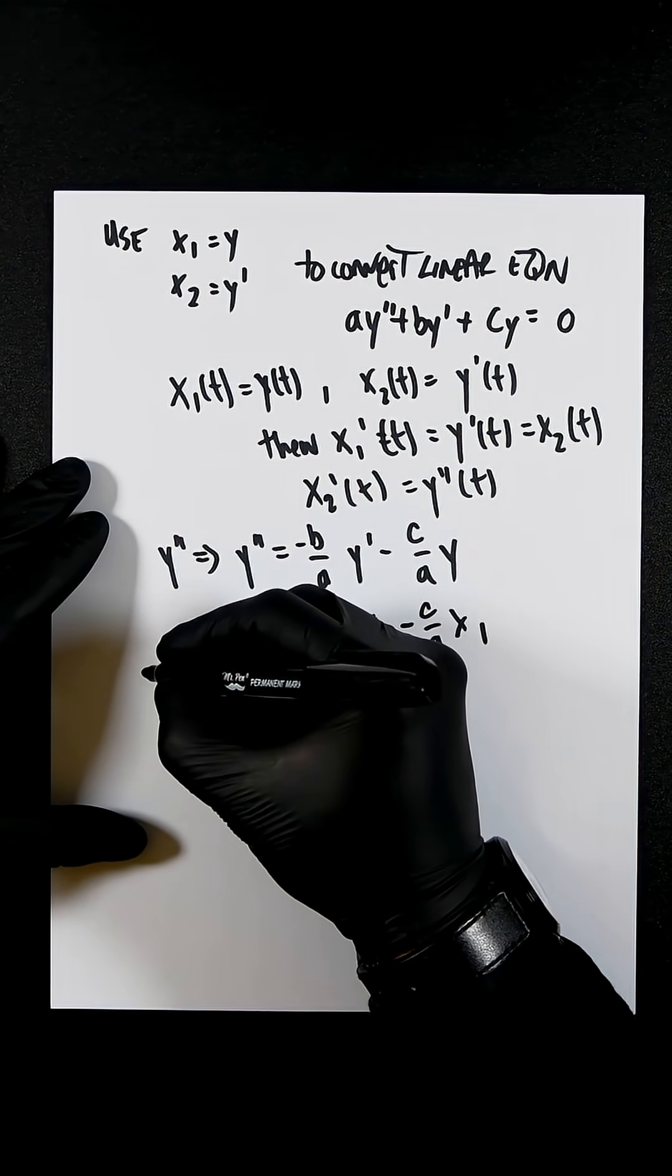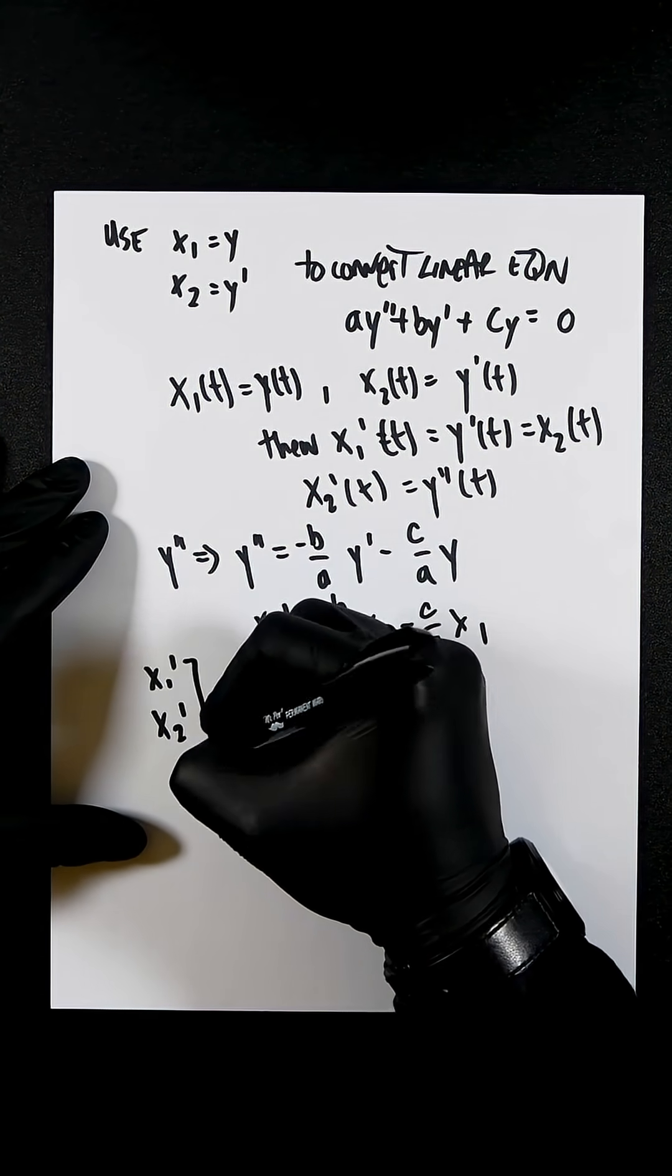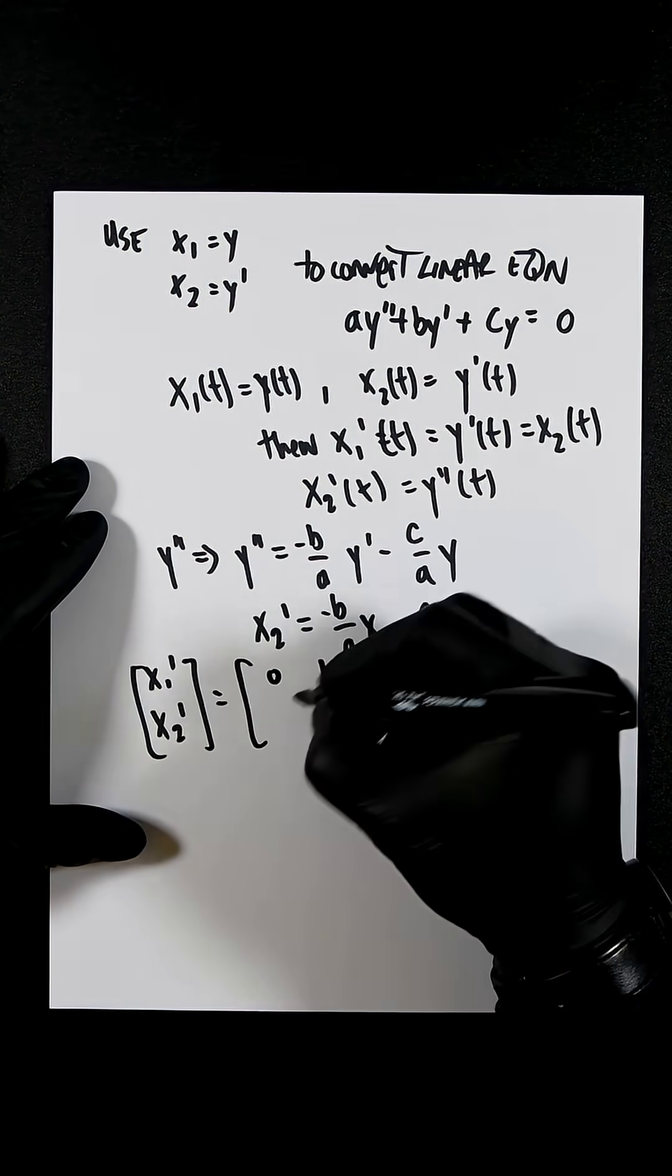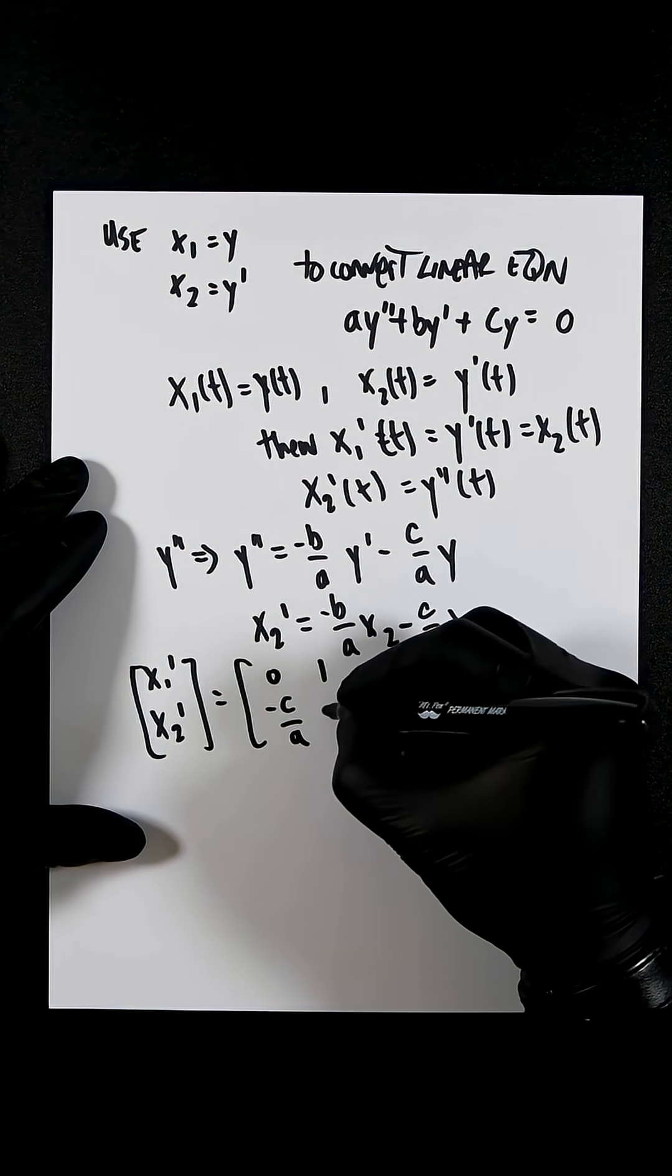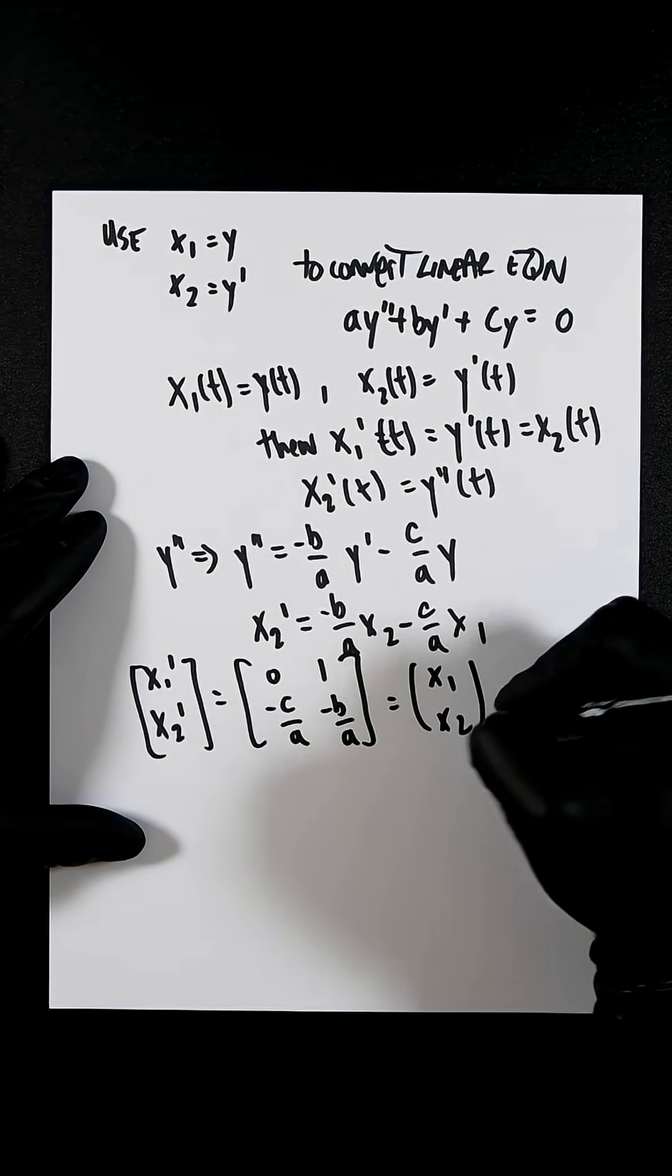And if you write that in matrix form, you're going to get x1 dash x2 dash is equal to 0, 1, minus c over a, minus b over a, which is equal to x1 x2.